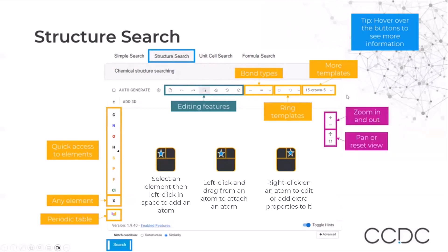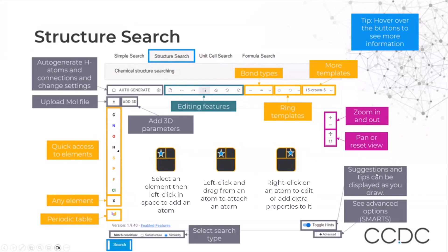On the right-hand side, we have the options to zoom in and zoom out or pan and reset the views in the sketcher. Some of the more advanced options include auto-generate the hydrogen atoms and the connections, uploading a mol file, and adding 3D parameters.